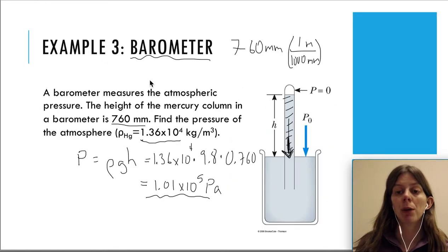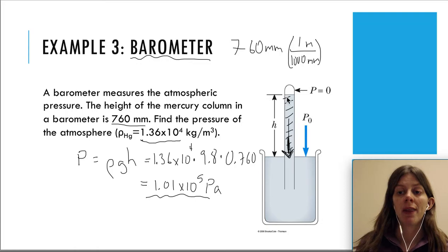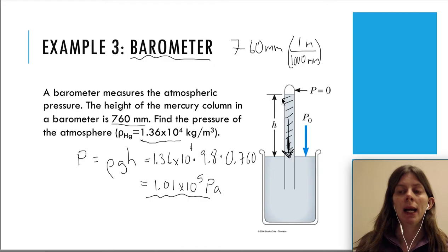The purpose of this example is first to show that at standard atmospheric pressure the mercury height in a barometer is 760 millimeters. If the pressure is higher, the height goes up. The other reason is to remind you that the pressure due to the weight of a liquid is ρgh.